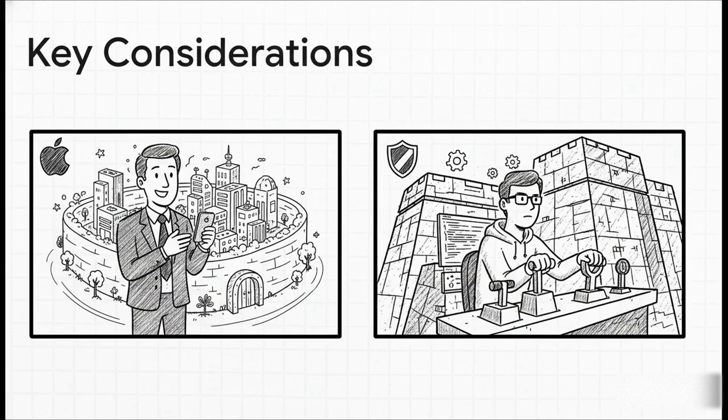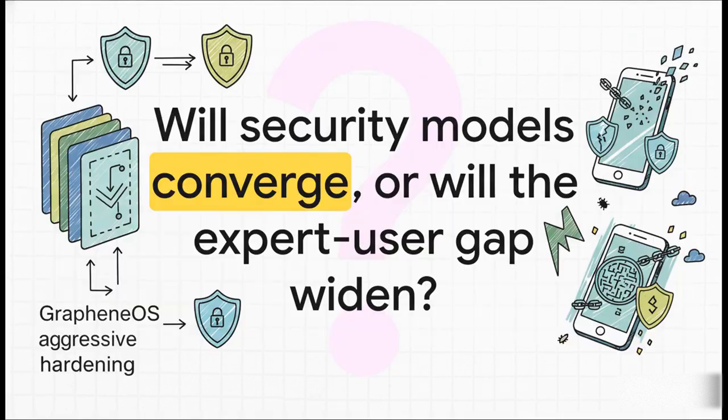We'll end with a final question to consider: as threats like zero-click exploits become more widespread, will we see the security models of mainstream operating systems start to converge and adopt the kind of aggressive hardening seen in GrapheneOS? Or will the gap between user-centric and expert-centric security paradigms just continue to widen? The future trajectory of mobile security really depends on that answer.